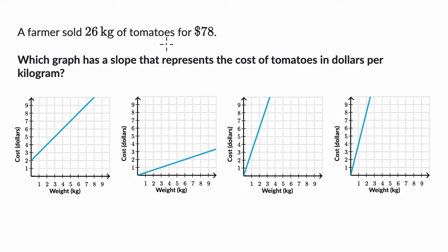A farmer sold 26 kilograms of tomatoes for $78. Which graph has a slope that represents the cost of tomatoes in dollars per kilogram? Pause this video, work through this on your own before we do this together.